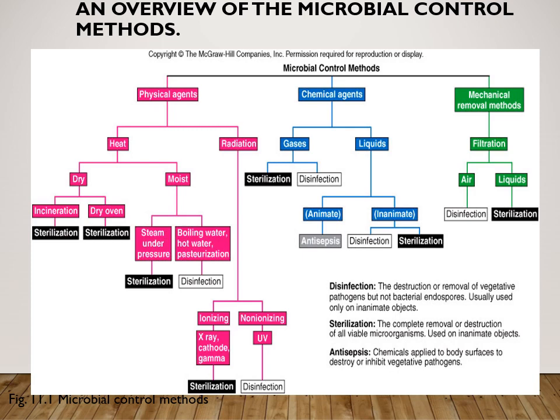Under radiation, ionizing types include X-rays, cathode rays, and gamma rays, while non-ionizing includes UV rays. Chemical agents include disinfectants and gases. Mechanical removal methods use barriers such as membrane filters — for example, HEPA filters for air and various filters for water — to physically remove microorganisms without chemicals or heat.